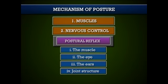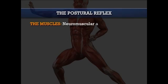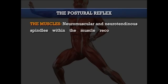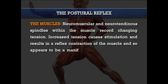Next comes the postural reflex. A reflex is defined as an efferent response to an afferent stimulus. The efferent response in this instance is a motor one, with the antigravity muscles being the principal effector organ. The afferent stimuli arise from a variety of sources all over the body, the most important receptors being situated in the muscles themselves, the eye and the ear. The neuromuscular and neurotendinous spindles within the muscles record changing tension. Increased tension causes stimulation and results in the reflex contraction of the muscles — a manifestation of the myostatic or stretch reflex.